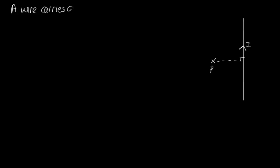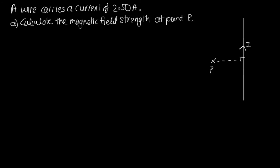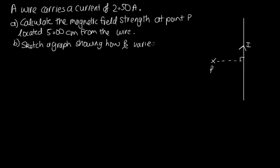So the question is, a wire carries a current of 2.50 amps. Part A, calculate the magnetic field strength at a point P located 5.00 centimeters from the wire. Part B, sketch a graph showing how the magnitude of the magnetic field varies with distance from the wire.